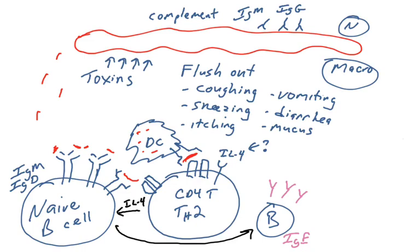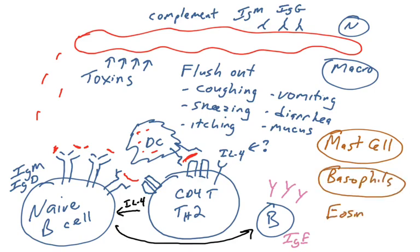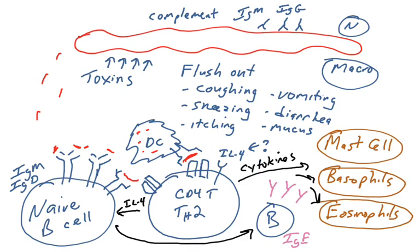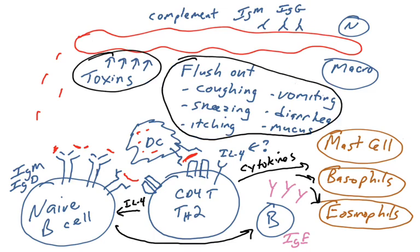Now that we have IgE, that can be used to combat a parasite by triggering the activation of mast cells, basophils, and eosinophils. These are granulocytes that use IgE to recognize a pathogen. When they recognize a pathogen, these cells, which can also be stimulated by cytokines, will unleash toxins onto the pathogen, onto this parasite.